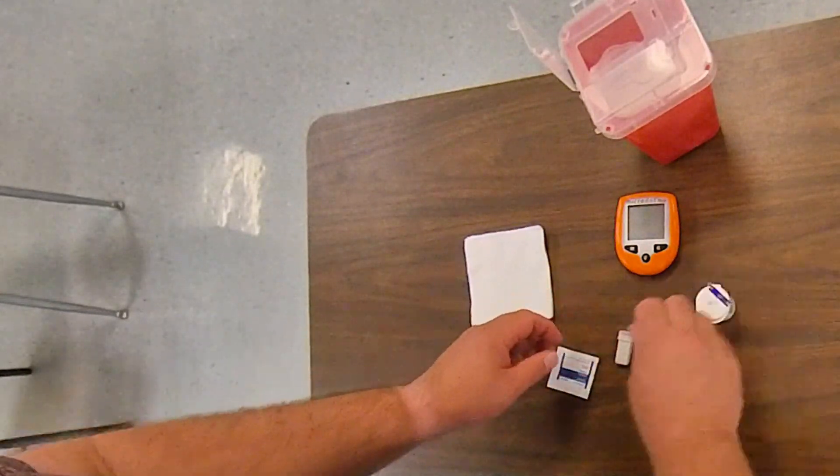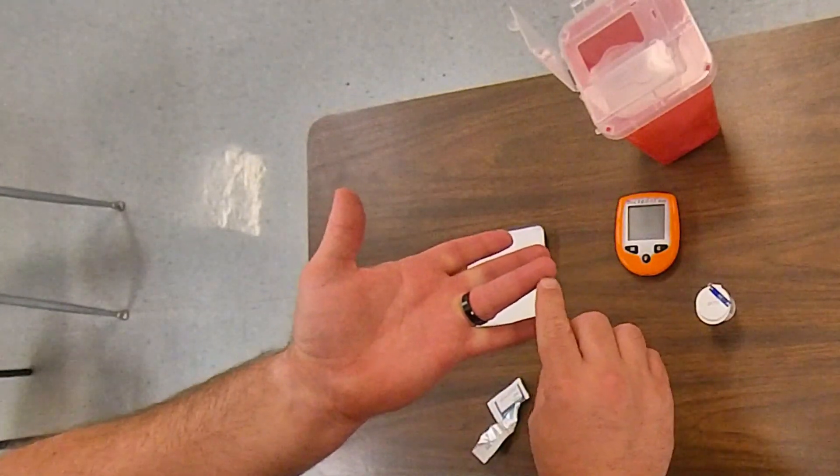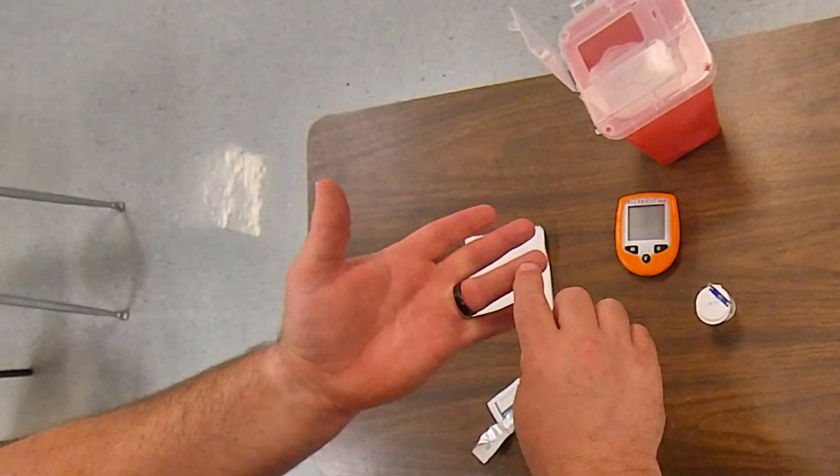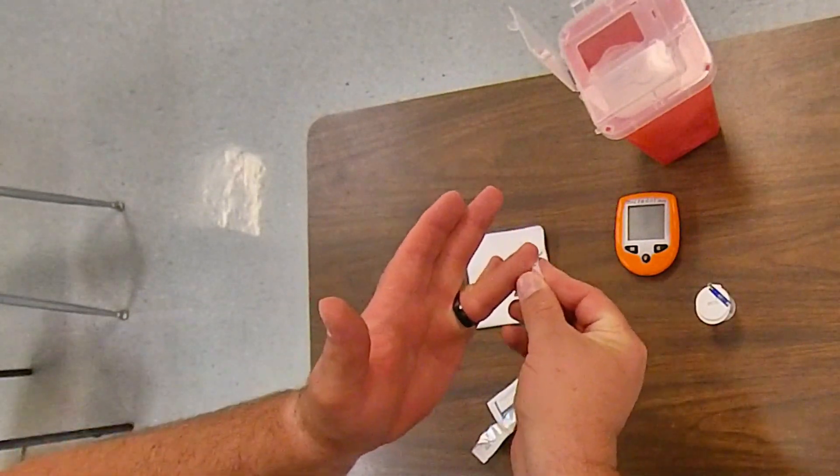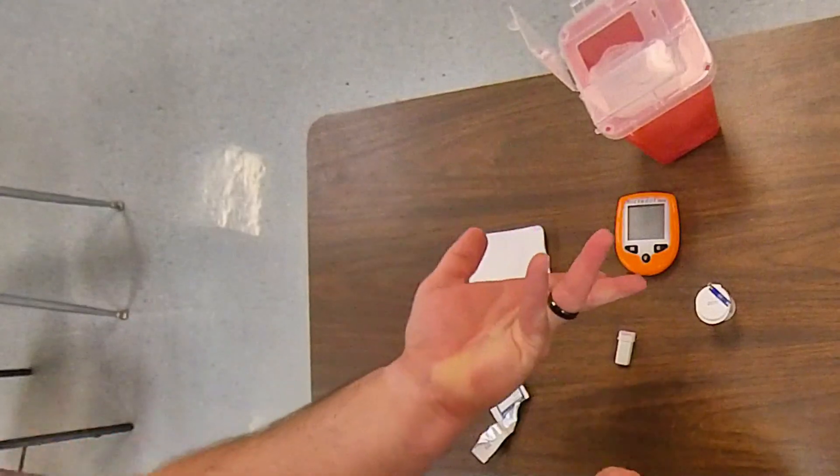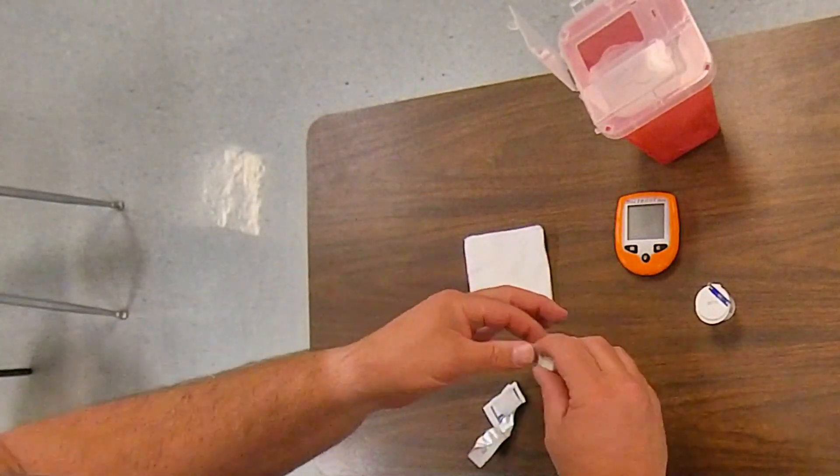So at this point, I'm going to go ahead and prep my finger and typically the side is a little less sensitive than the center of the pad. So you usually pick the side and you want to think about which side is going to be down so you're not having to crank their wrist in a weird angle to try to get it to milk out.